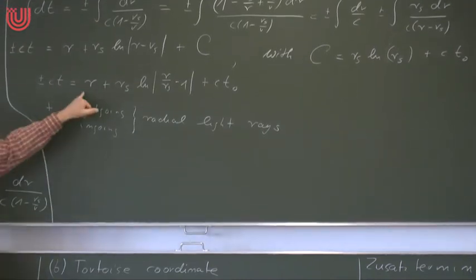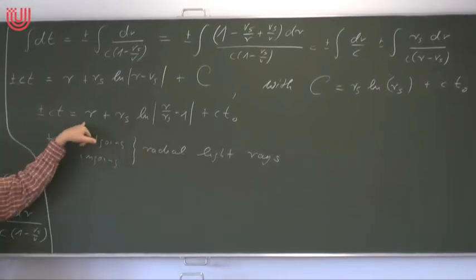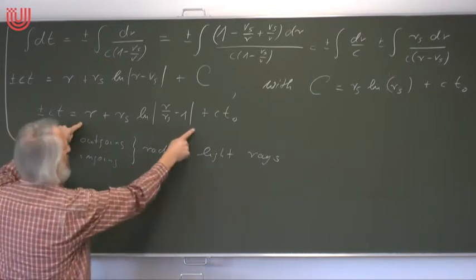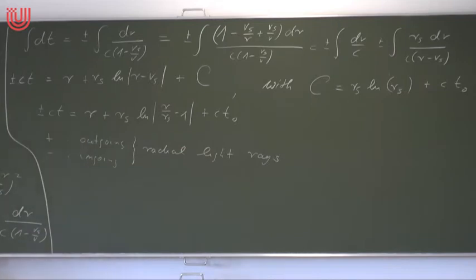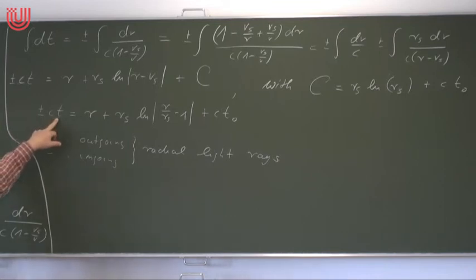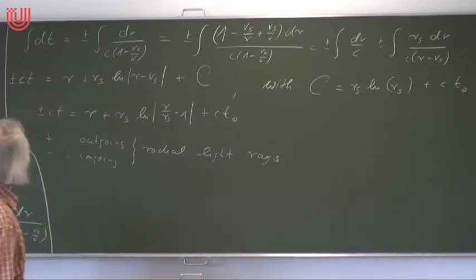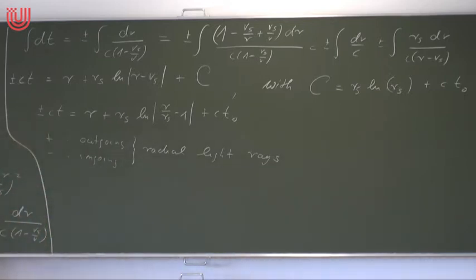Notice that the expression r + rs ln(r/rs − 1) is precisely the tortoise coordinate r-hat. So the tortoise coordinate appears naturally in the equation for radial light rays. If you want to write the equation for radial light rays in the form dt/dr = constant, the r-coordinate you must use is the tortoise coordinate.